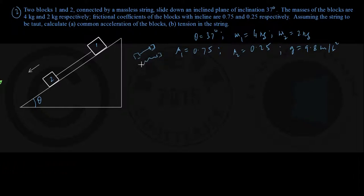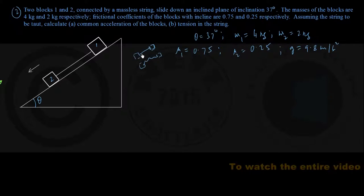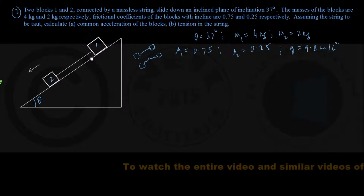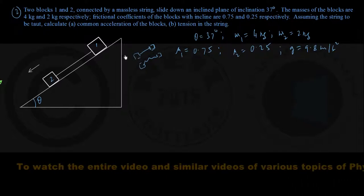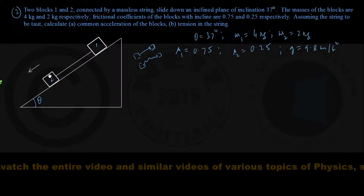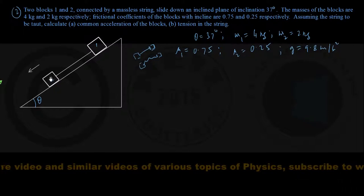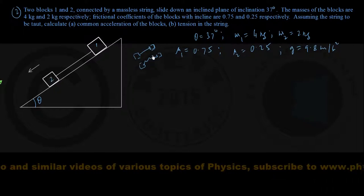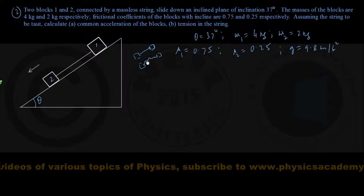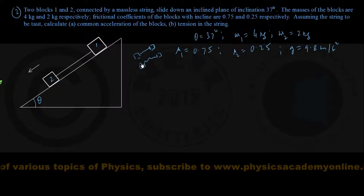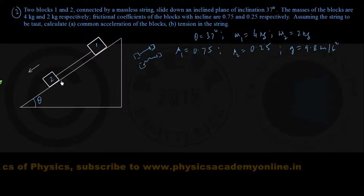If the string were slack, I cannot assume the acceleration of the blocks will be the same. But when the string is taut, in constrained motion, both blocks must possess the same acceleration down the incline — which would not be the case if the string were slack. That is the significance of the string being taut.